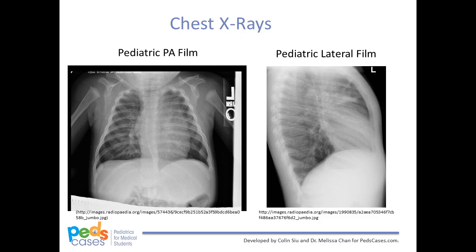Firstly, penetration. You should be able to appreciate the thoracic spine through the heart. If the film is underpenetrated, the left hemidiaphragm will not be visible. Secondly, inspiration. An adequate film will show 9-10 posterior ribs. Pediatric chest x-rays must be taken with a sufficient inspiratory effort from the patient, as a film taken on expiration or with minimal inspiratory effort may exaggerate the heart size and bronchovascular markings. Thirdly, rotation.